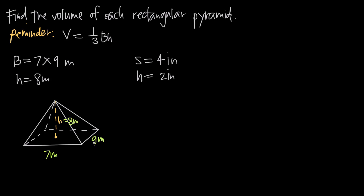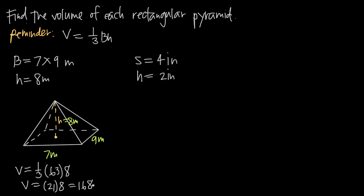I can plug these values into the formula. Volume is equal to one third times the area of the base. Since this is rectangular, the area is length times width. My length is seven meters and my width is nine meters, so seven times nine gives me 63. The area of the base is 63 square meters, and the height is eight meters. 63 divided by three gives me 21, and 21 times eight gives me 168.